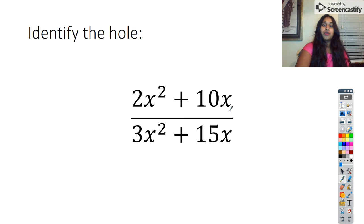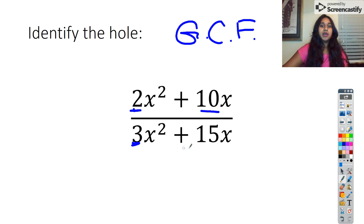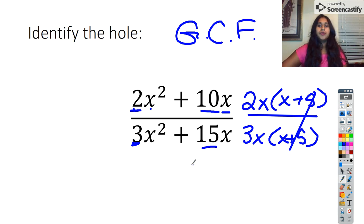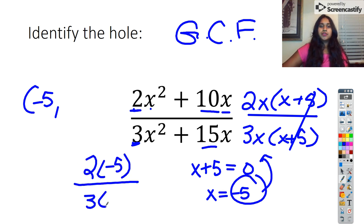Here we have another hole. This question stumped you in class because you didn't recognize you can factor using the greatest common factor. I have a common factor of 2, a common factor of 3, and X's everywhere. So this actually factors as 2X times X plus five over 3X times X plus five. Now you have a common factor — that is your hole. So X plus five equals zero, meaning X equals negative five. I plug negative five back in: 2 times negative five over 3 times negative five equals negative ten over negative fifteen, which is positive two thirds. So the hole is at negative five comma two thirds.